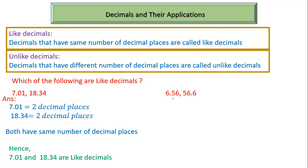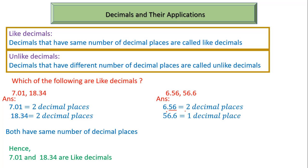Let's take one more problem: 6.56 and 56.6. In the first decimal number 6.56, there are two places to the right side of the decimal point, so it has two decimal places. In the second decimal number 56.6, there is only one place to the right side of the decimal point, so it has one decimal place.